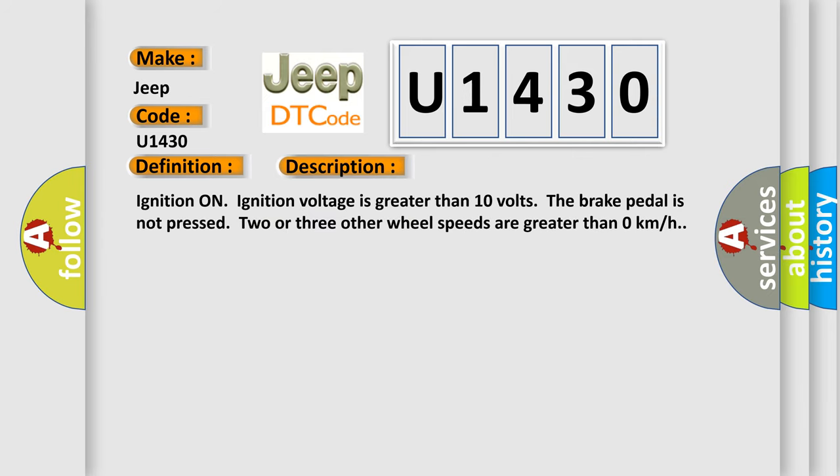Ignition on, ignition voltage is greater than 10 volts. The brake pedal is not pressed. Two or three other wheel speeds are greater than zero kilometers per hour.